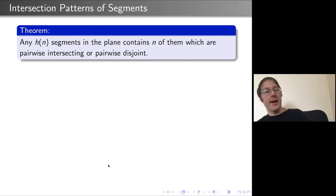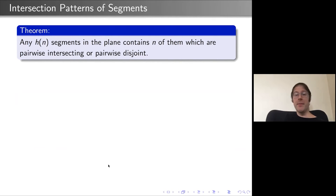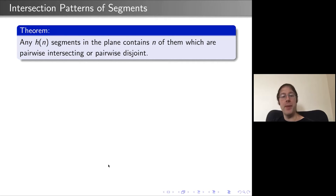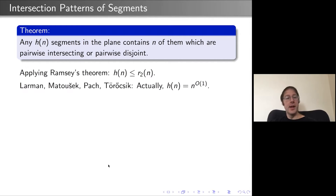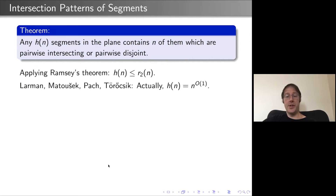Here's another example: if you have a collection of segments in the plane, you can find n of them which are pairwise intersecting or pairwise disjoint. Applying Ramsey's theorem shows H(n) ≤ R_2(n), but actually you can do much better. Larman, Matoušek, Pach, and Törőcsik showed H(n) grows polynomially in n, with a bound of n^5, which is still the best known.